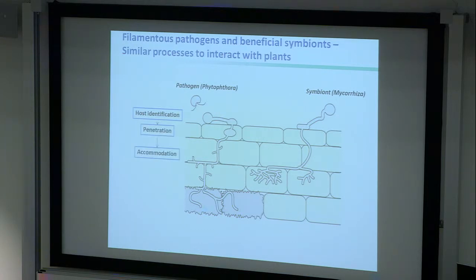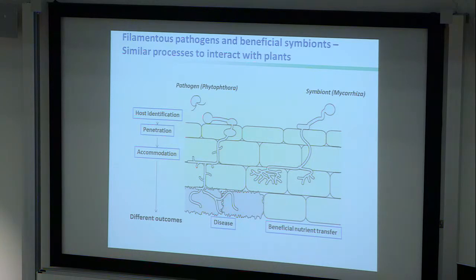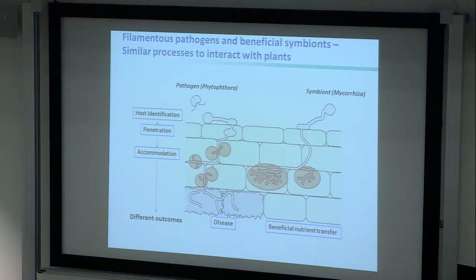After host identification, penetration, and accommodation steps — which usually take place in an almost undetected manner by the plant — the outcomes are completely different. Pathogens cause disease, often accompanied by tissue and cell death. In beneficial interactions, however, you have a long-lasting nutrient transfer: the fungus gets carbohydrates from the plant, the plant gets phosphate and other minerals from the fungus, and the fungus extends the plant's root system into the soil.